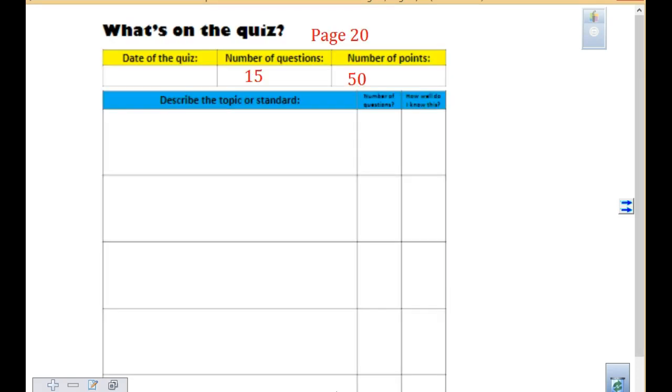So here's what's on the quiz. This is page 20. So turn back in your notes to page 20, a couple of pages before this. There are 15 questions, 50 points. The date of your quiz is tomorrow. That is 9-6. So write that in. 9-6, Thursday.